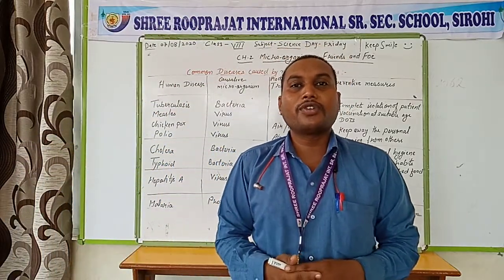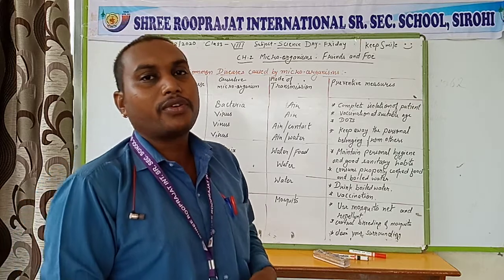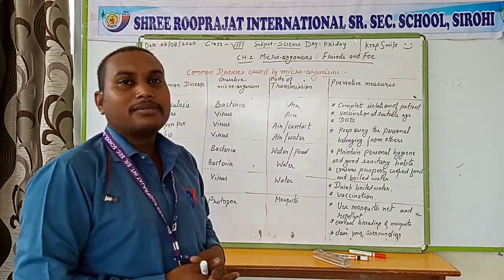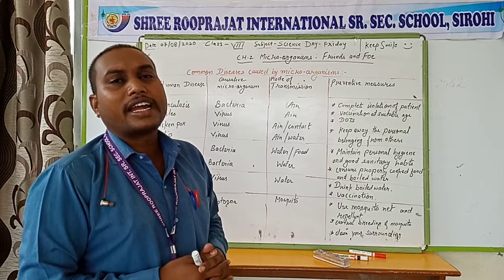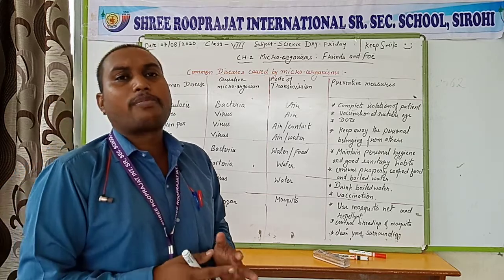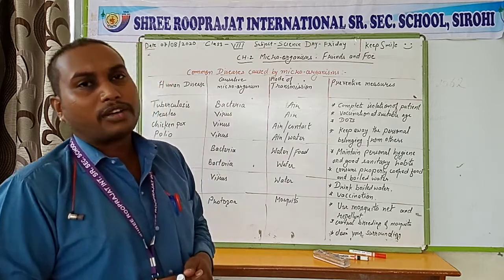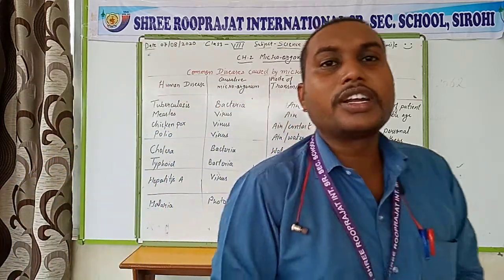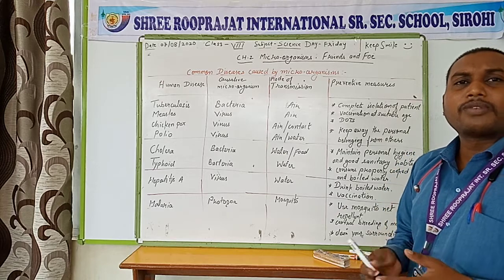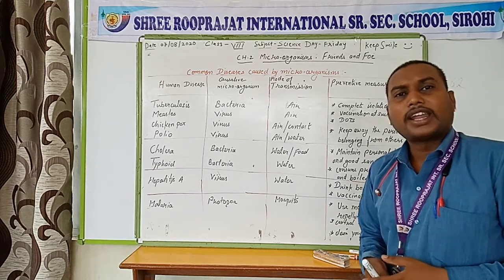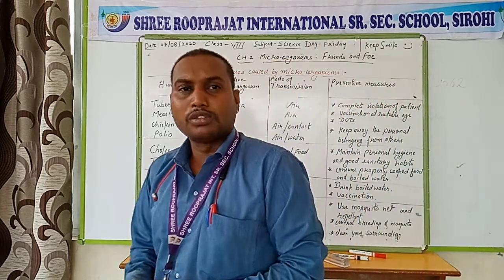Good morning students. Continuing our chapter number two, Microorganism: Friends and Foe. In our previous video we studied about microorganisms — those organisms which are very small and cannot be seen by the naked eye, such as fungi, protozoa, bacteria, viruses, etc. Today we will discuss the common diseases caused by microorganisms. Some bacteria or microorganisms are harmful for us, making them our foe, or enemy.